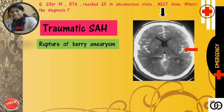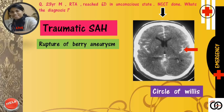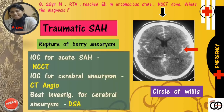The source of bleeding are the arteries and their branches involved in the formation of the circle of Willis. Remember: the investigation of choice for acute subarachnoid hemorrhage is NCCT, the investigation of choice for cerebral aneurysm is CT angiography, and the best investigation for cerebral aneurysm is DSA — digital subtraction angiography.